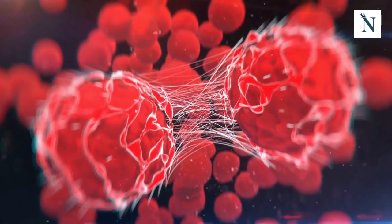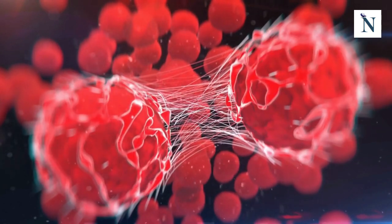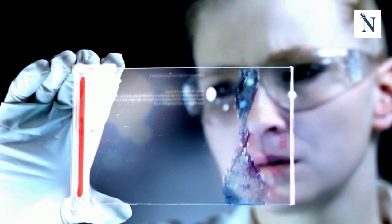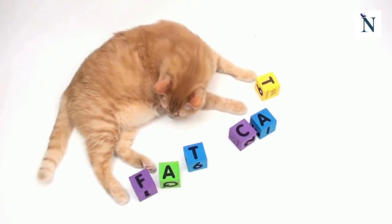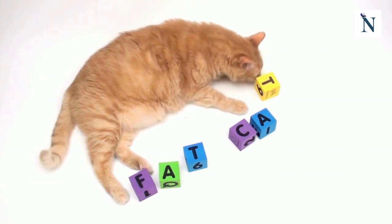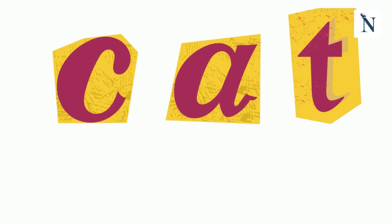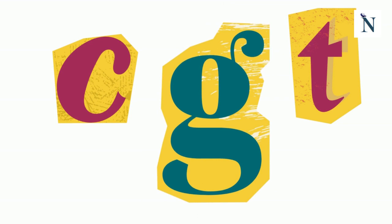Mutations are spontaneous changes in the DNA sequence, and they are the driving force behind genetic diversity. Some mutations are harmless, while others can lead to genetic disorders. A mutation is like a spelling mistake in a long word. Let's say you have the word C-A-T written in your book, and suddenly someone accidentally changes the A to a G, so it becomes CGT. That small change is a mutation.